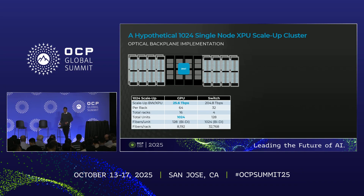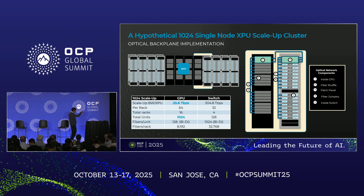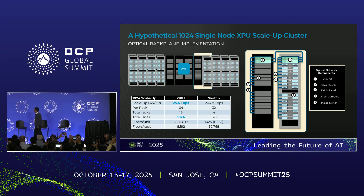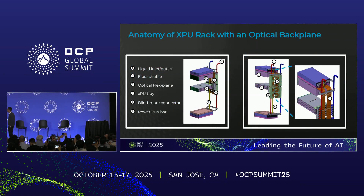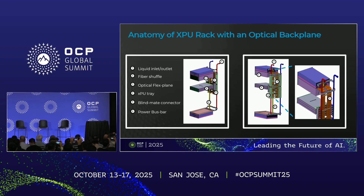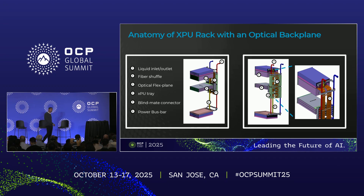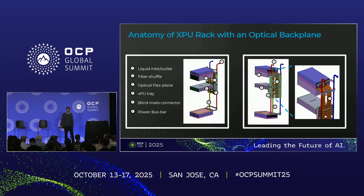Fiber count is important, so we need to start looking at BiDi and more detail on the rack. What does an optical backplane actually look like? You can see some of the ideas we've done with some of our partners. You need a fiber shuffle, blind mate connectors, and you need to worry about cooling and power. This is stuff we're working closely with the industry to develop.